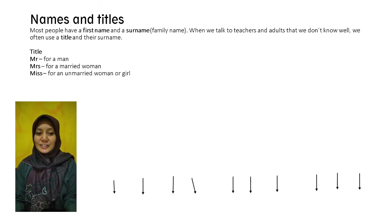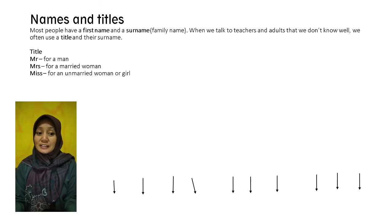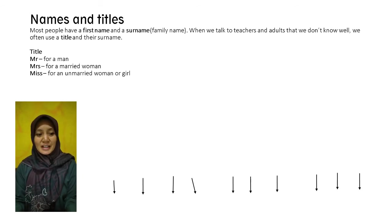Now let's learn about names and titles. Most people have a first name and a surname, or family name. When we talk to teachers and adults that we don't know well, we often use a title and their surname. Mister is for a man, Mrs. is for a married woman, and Miss is for an unmarried woman or girl.